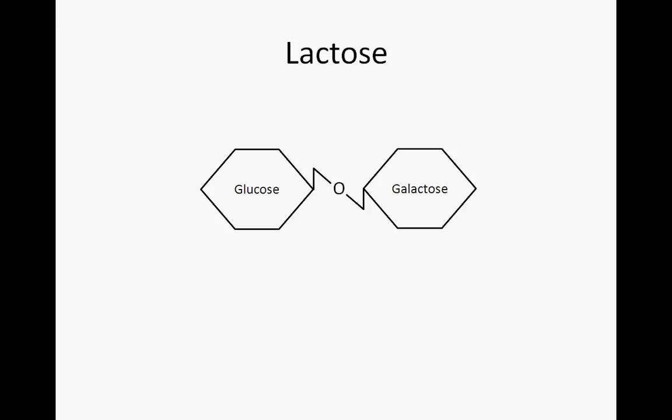Lactose is a disaccharide consisting of galactose and glucose. In order for a bacterial cell to make use of lactose as an energy source, it must cleave the disaccharide in two, a job performed by the enzyme beta-galactosidase. Production of beta-galactosidase when the cell does not need to use lactose would be a waste of energy and should be avoided. Therefore, the lac operon is only turned on under specific conditions.